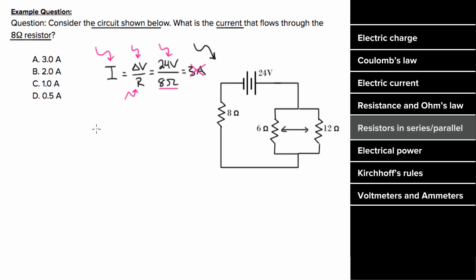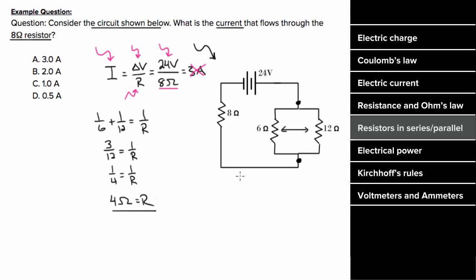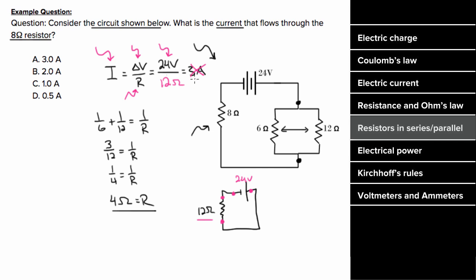The six and twelve ohm resistors are in parallel: 1/6 + 1/12 = 3/12 = 1/4, so their equivalent resistance is 4 ohms. That equivalent resistance is in series with the eight ohm resistor, giving a total resistance of 12 ohms. Now the full 24 volts is applied across the total equivalent resistance of 12 ohms, so the current from the battery is 24/12 = 2 amps. Since the eight ohm resistor and the battery are in series, 2 amps flows through the eight ohm resistor.